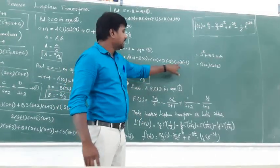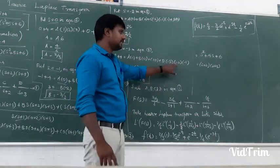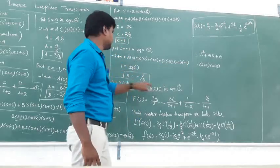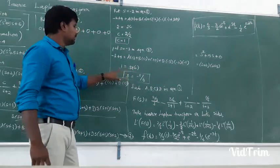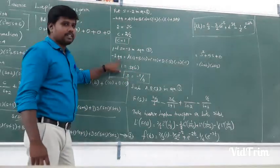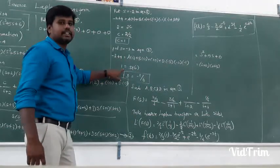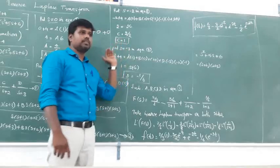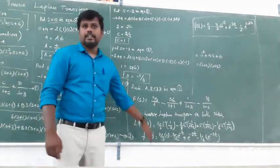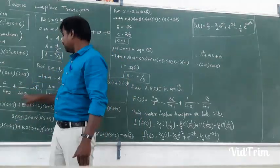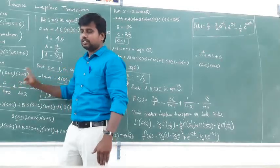Minus into minus is plus. 2 into 3 is minus 6. Plus 6 into minus 1 is minus 6. So minus 6 into 3 gives D. Left hand side: minus 3 plus 4 is plus 1. D value equals 1 divided by minus 6, which is minus 1 by 6. So then we have A, B, C, D - four answers. The answer in equation number 1 is: A by S, plus B by S plus 1, plus C by S plus 2, plus D by S plus 3.